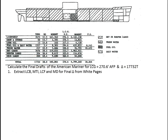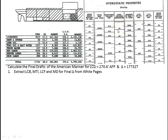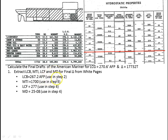What we're going to do is extract some data from the hydrostatic table — in this case from the deadweight scale for the American Mariner. We're going to extract the longitudinal center of buoyancy, the moment to trim one inch (MTI), the longitudinal center of flotation, and the mean draft, all for this displacement of 17,732. We'll use LCB in step 2, MTI in step 3, and LCF and mean draft in step 4. That completes step 1.